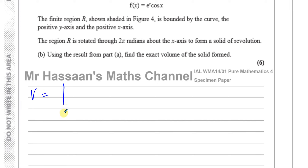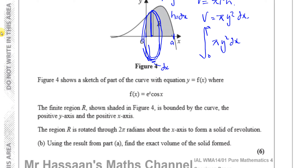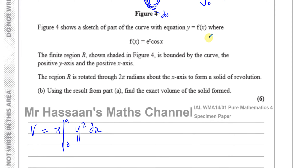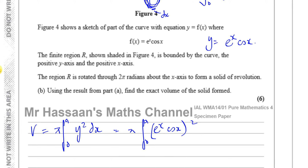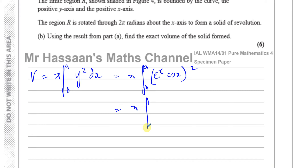Here y = e^x·cos(x), so y² = e^(2x)·cos²(x). Squaring: (e^x)² = e^(2x) and (cos(x))² = cos²(x). So we need to integrate e^(2x)·cos²(x) dx between 0 and A, where A is the point where the curve hits the x-axis. We need to find that limit.